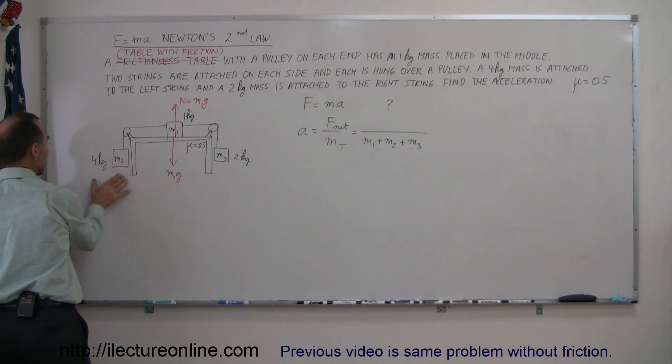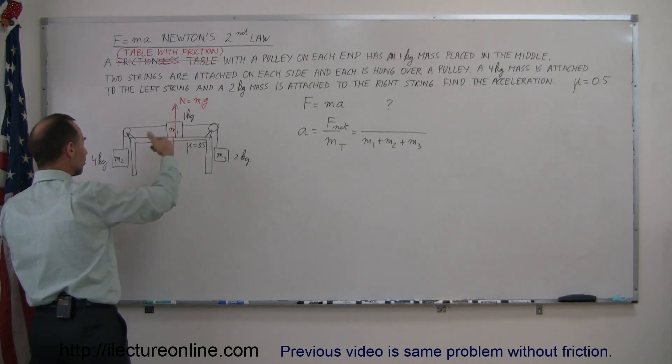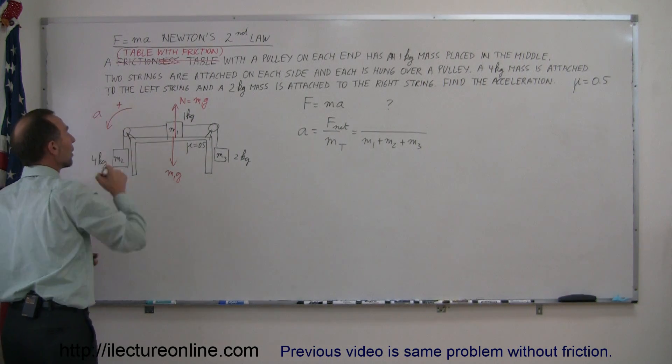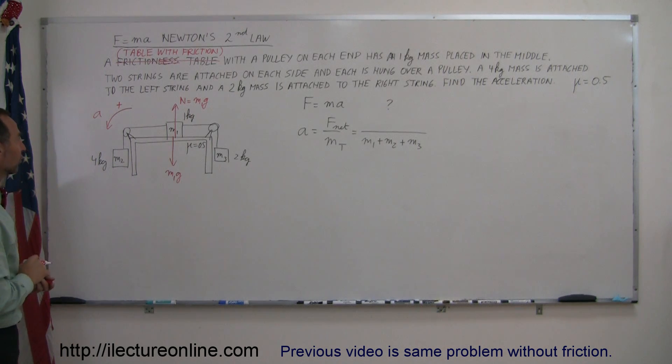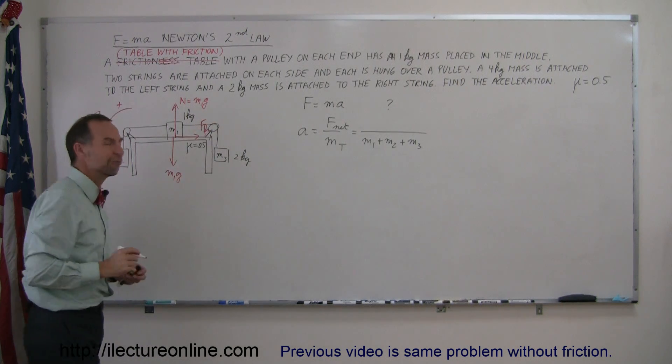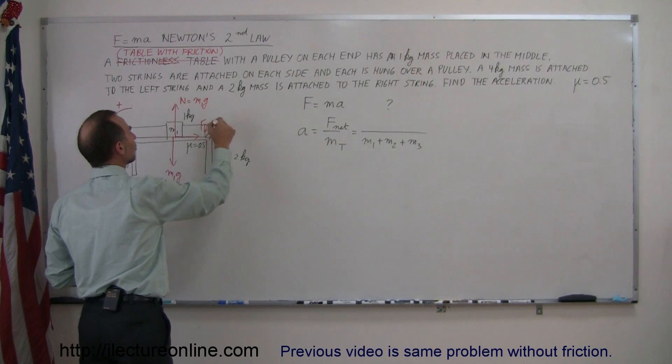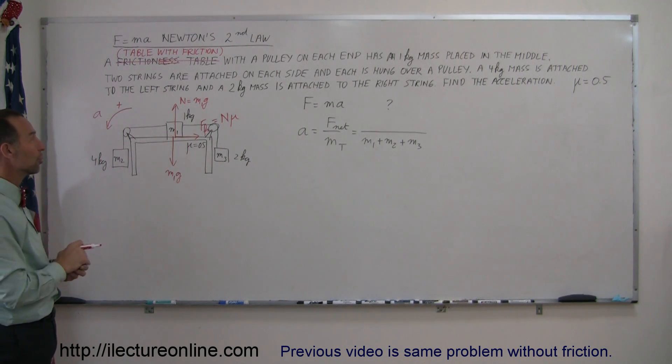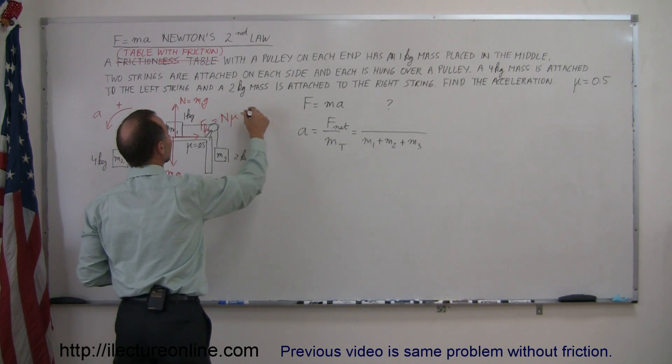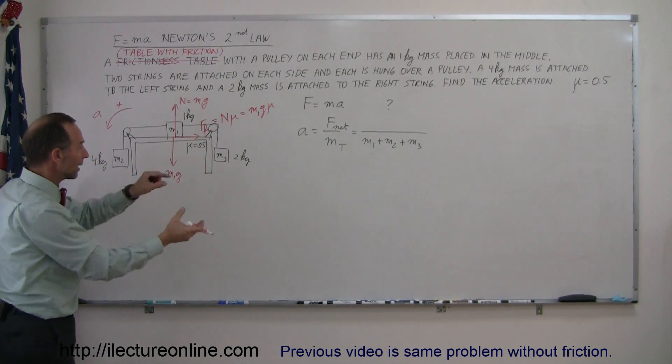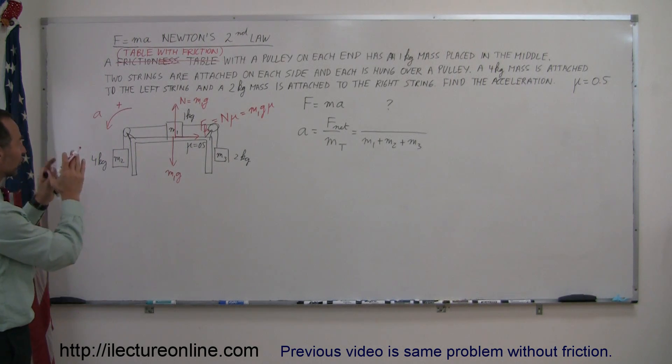Since there's friction between M1 and the table, there will be a friction force. Realizing the left mass is bigger than the right mass, the whole system will accelerate to the left. That will be the assumed direction of acceleration, the positive direction. The friction force will oppose that, so it's in the opposite direction. By definition, the friction force equals the normal force times the coefficient of friction, so it equals N times μ. Since N equals M1g, we can write the friction force as M1gμ. That represents the friction force pushing to the right as the system accelerates to the left. Those are all the forces acting on M1.